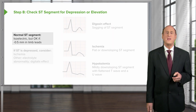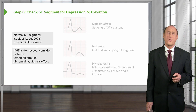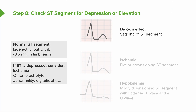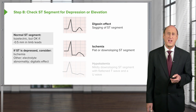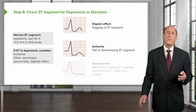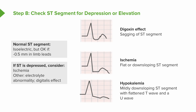The ST segment should be isoelectric — flat. A little depression can occur, but if it's substantially depressed it suggests several things. A curved sagging of the ST segment means the patient is usually taking digitalis. If there's ischemia or lack of blood flow, you see a squared-off flattening of the ST segment — seen with positive exercise tests and non-ST elevation myocardial infarction. In hypokalemia where the potassium is low, you may see a mildly downsloping ST segment, a flattened T wave, and possibly a U wave after the T wave.